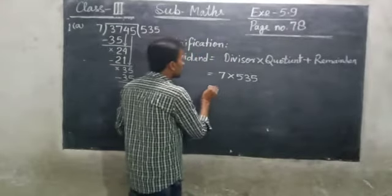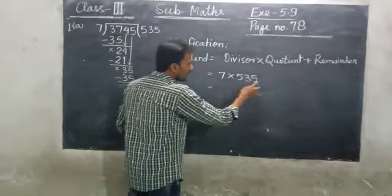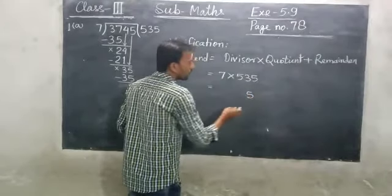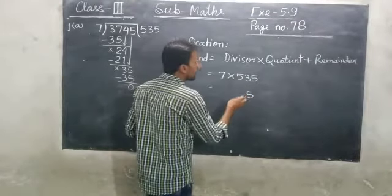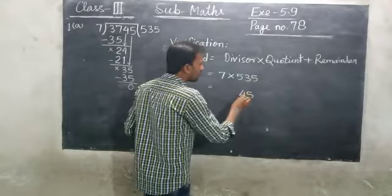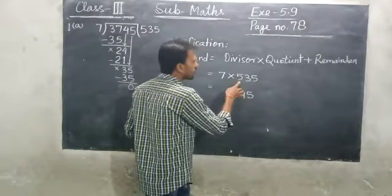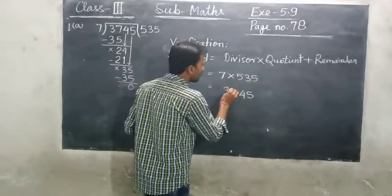Multiply: 7 times 535. 7 times 5 is 35, carry 3. 7 times 3 is 21 plus 3 equals 24, carry 2. 7 times 5 is 35 plus 2 equals 37.